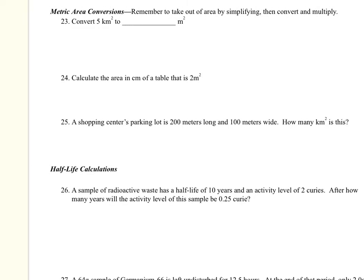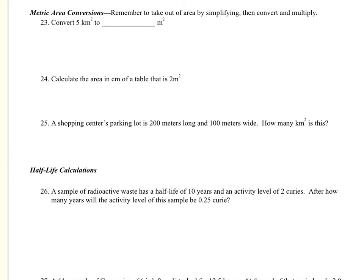So we're going to convert 5 kilometers squared to meters squared. So first I got to simplify it, and so 5 kilometers squared is equal to 5 kilometers times 1 kilometer. Then I'm going to convert to meters, and so there are 1,000 meters in a kilometer. So this is equal to 5,000 meters times,